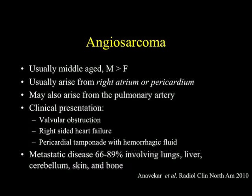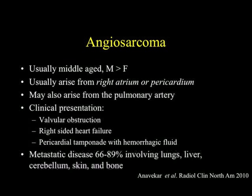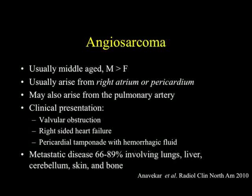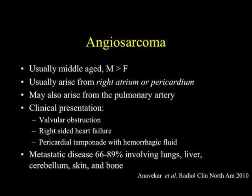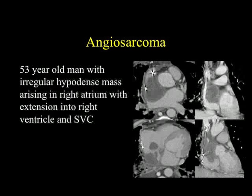Angiosarcoma typically affects middle-aged patients, more common in men than women, and usually arises from the right atrium and pericardium. Clinical presentation is variable — you can have valvular obstruction, right-sided heart failure, or pericardial tamponade with hemorrhagic fluid. Metastatic spread occurs in up to about 89 percent of cases, involving lungs and liver, and can go to brain, skin, and bone. Here's a great case: an infiltrating process in the right atrium that's hypodense but not like fat — a hypodense mass of right atrium origin with extension into the right ventricle and SVC. Primary sarcomas are really infiltrating in nature.